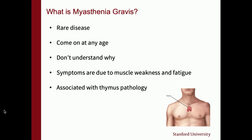MG is a rare disease — we think maybe 60 to 70,000 patients in the US. The prevalence is growing as we diagnose it more because we're more aware of the disease, and also because patients are living longer. It can really come on at any age. Most commonly it's in the 30s for women and 50s for men, but you can have childhood onset, which we call juvenile onset, late onset after 50, or very late onset after 65.